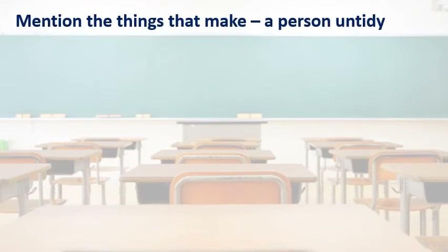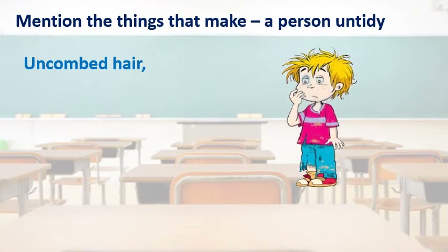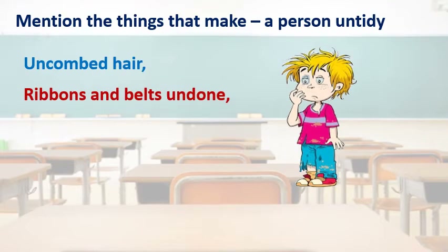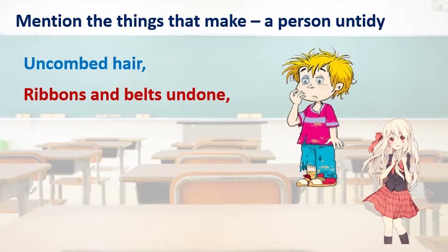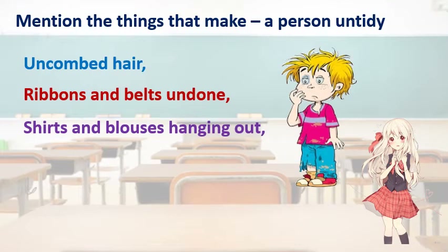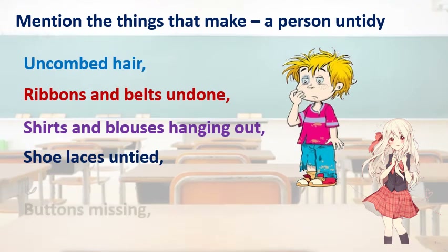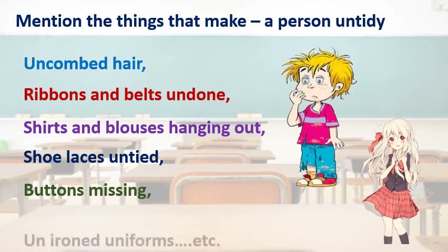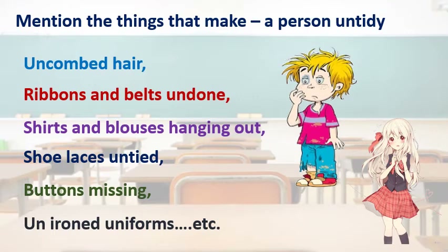Mention the things that make a person untidy. Just now we went through about the untidy class — now here about an untidy person. Uncombed hair. See this boy — he is looking untidy because of his hair and his dress. Ribbons and belts undone. Shirts and blouses hanging out. Shoelaces untied. Buttons missing. Unironed uniforms — these are all the different things that make a person untidy.